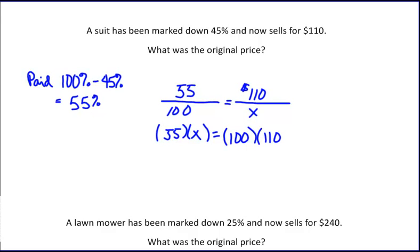So we have at this point 55x equals 11,000. If we divide by 55, we will end up with $200.